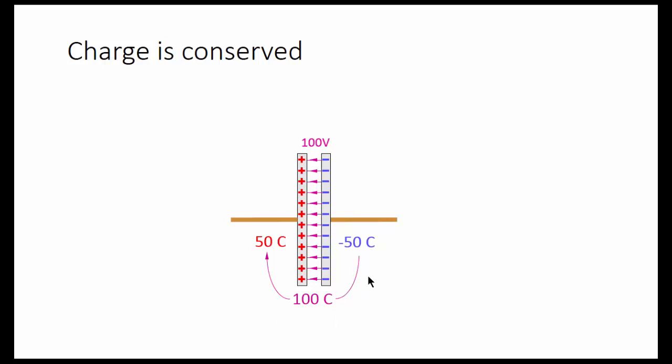That's why we say we store 100 coulombs on this capacitor. And there's an electric field between these two plates because the positive and negative charges attract each other. The force of attraction holds that charge in place.